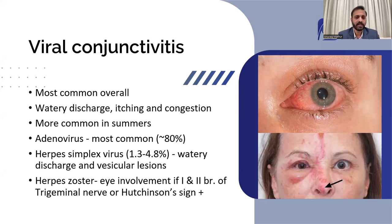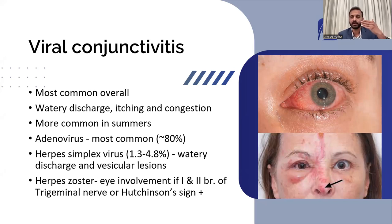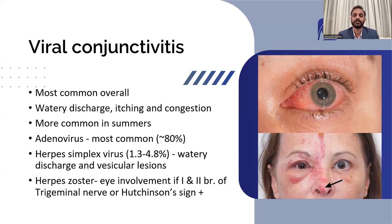Herpes zoster, also called shingles, basically affects the dermatome or skin of the patient. Eye involvement is very frequent if the first and second branch of the trigeminal nerve, which serves the upper and middle part of the face, is involved. Hutchinson's sign — whenever it is present — indicates a very high likelihood of ocular and corneal involvement. Whenever you see a vesicle at the tip of the nose, this is a positive Hutchinson's sign, suggesting the patient's eye will also be involved. This is a very important sign.